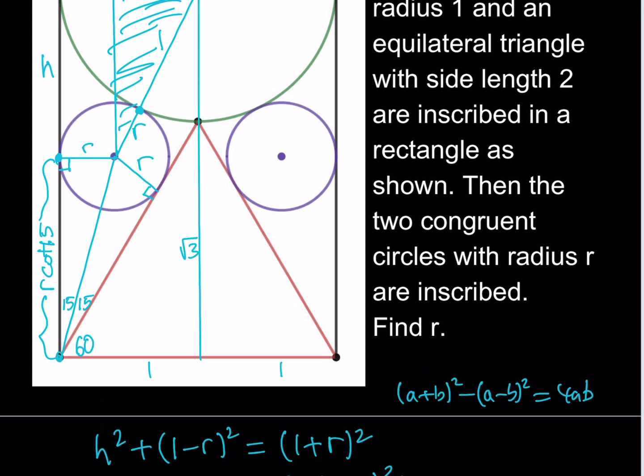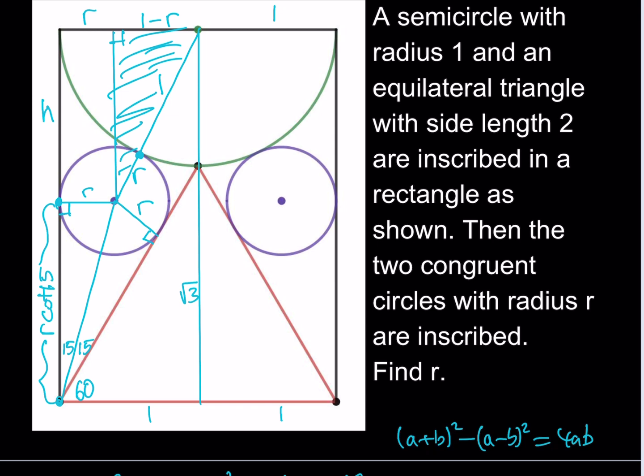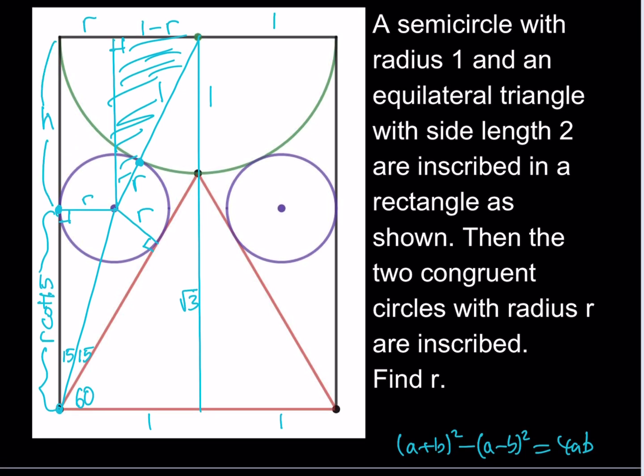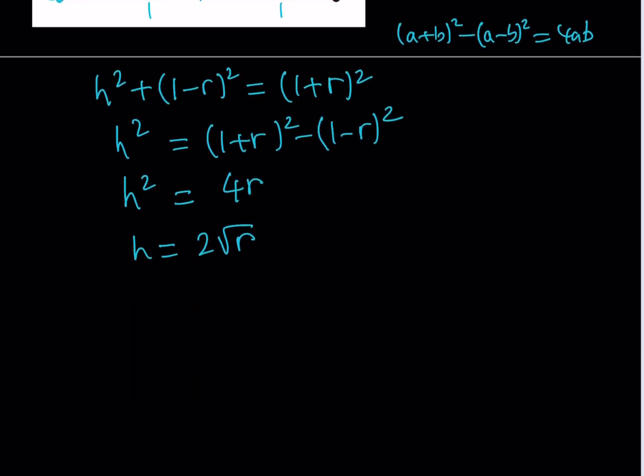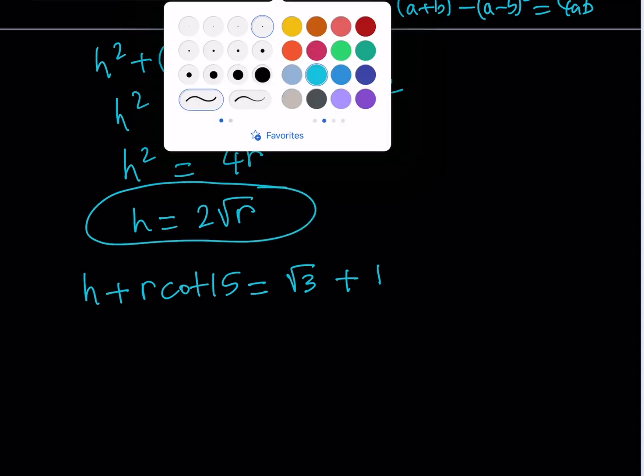And then I know this length. And I also know that the height here for the rectangle would be root 3 plus 1. So here we go. This is when I use the root 3. So I'm using it. So again, one more time. H, this one, plus R cotangent 15 is equal to 1 plus square root of 3, or square root of 3 plus 1. Let's go ahead and write this down as an equation. H plus R cotangent 15 is equal to square root of 3 plus 1.